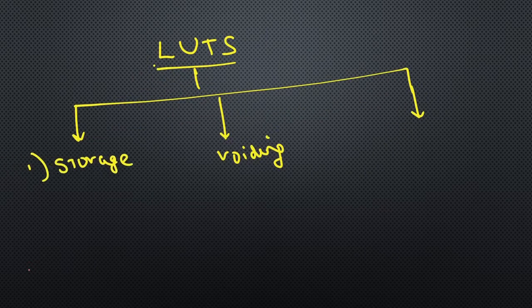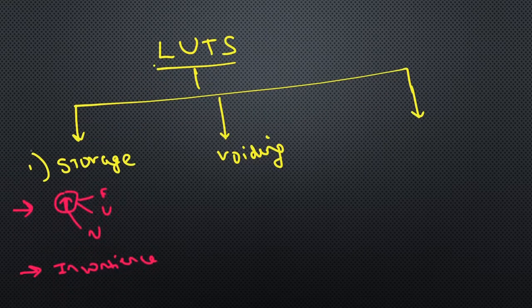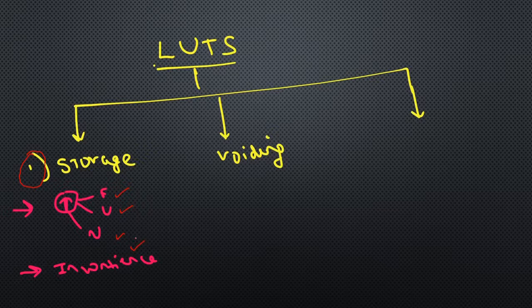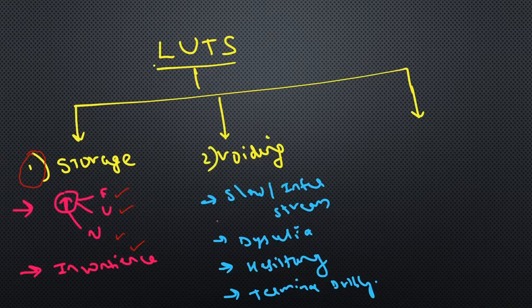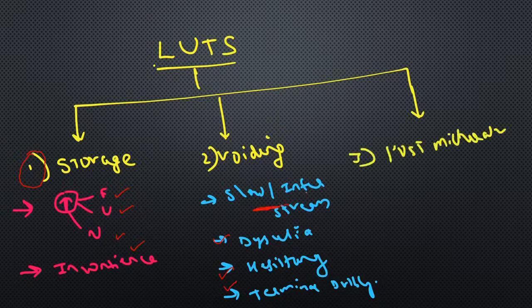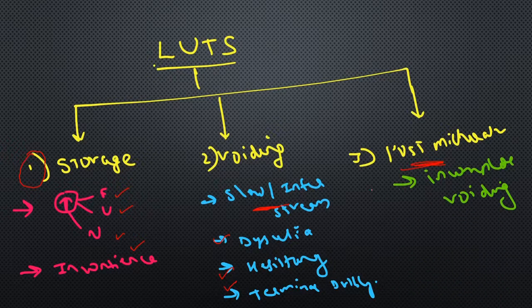Whenever a patient has lower urinary tract symptoms, they can be classified according to the symptoms as storage symptoms, voiding symptoms, or post-micturition symptoms. Storage symptoms are usually frequency, urgency, and nocturia — that is increased frequency — and there may be incontinence. Voiding symptoms are related to the urinary stream: hesitancy, terminal dribbling, dysuria, and intermittent stream. The third category is post-micturition symptoms, such as incomplete voiding.